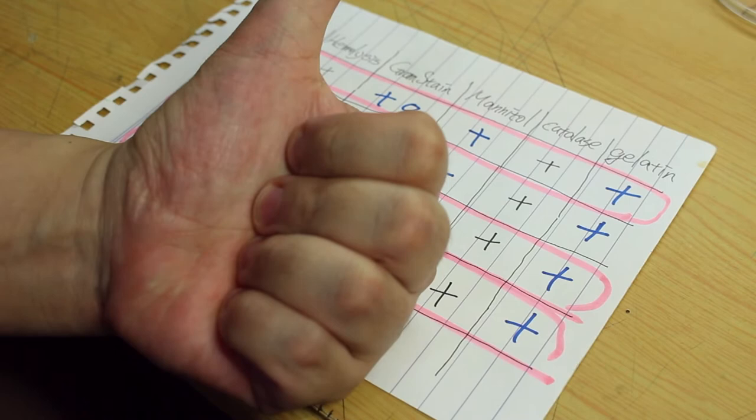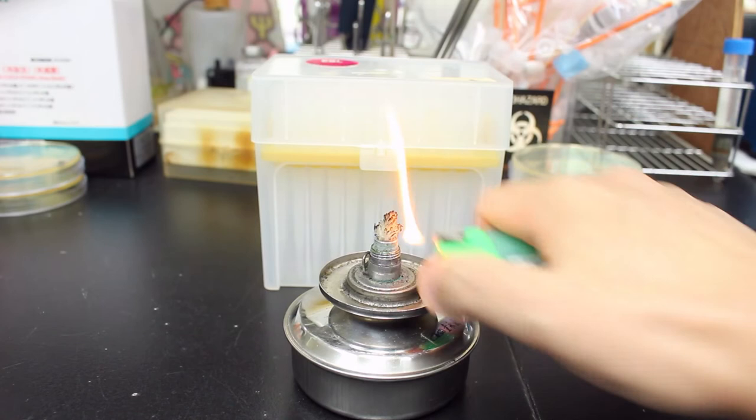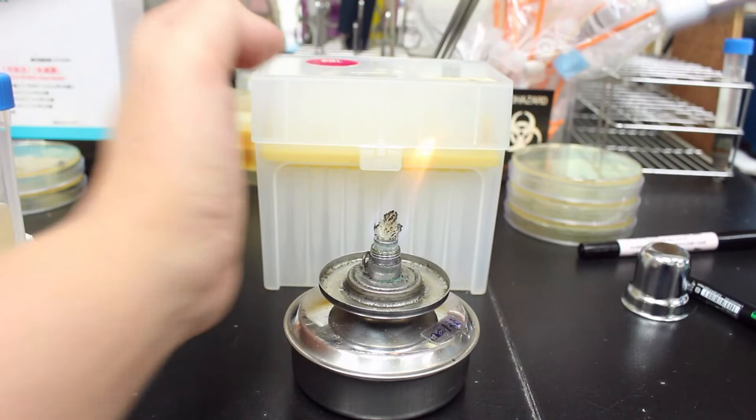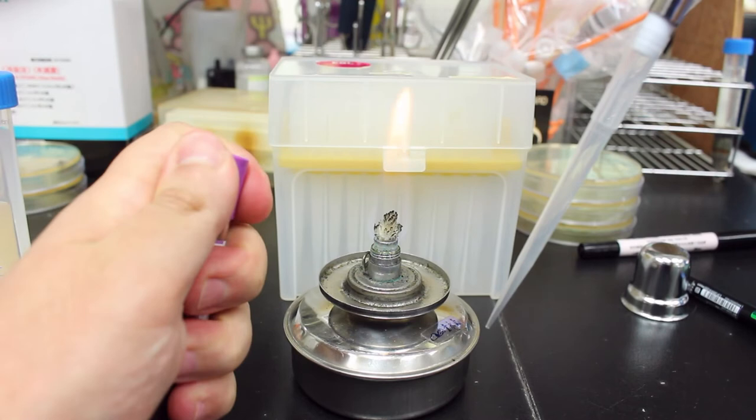It's called coagulase test. It is a very important test used to identify S. aureus. The reason why I put it in the extra is because this test requires plasma to work, which is not very DIY friendly material. Normally we use animal plasma like rabbit, but in here I use human plasma.